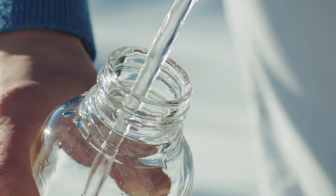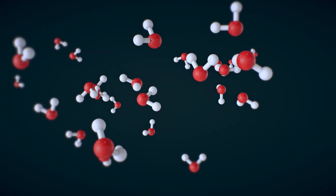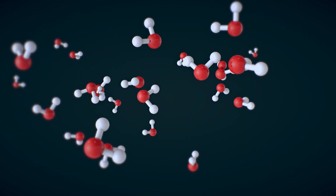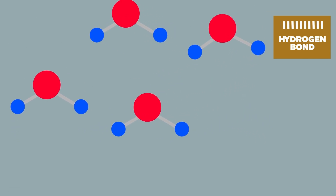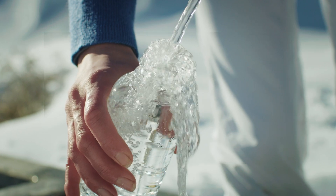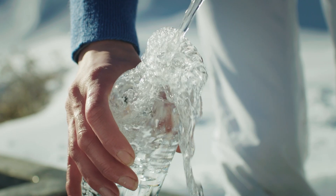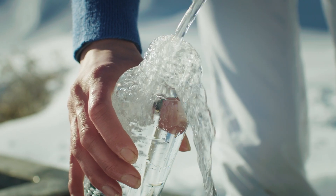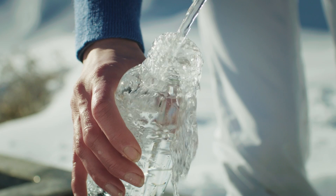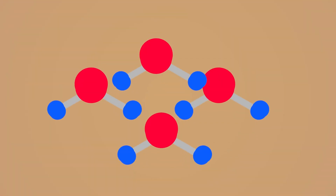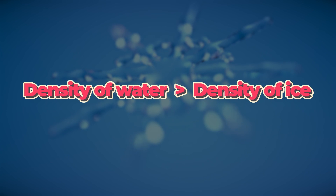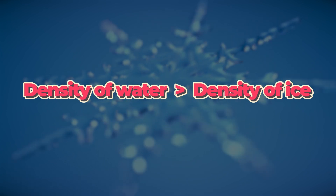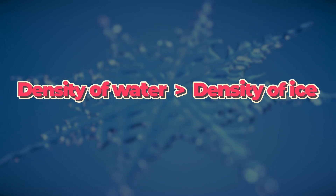In liquid form, water molecules can move freely, forming and breaking hydrogen bonds in the process, which accounts for the irregular shape of water or any other liquid. Some water molecules are stacked on top of each other, which explains the higher density of water as compared to ice.